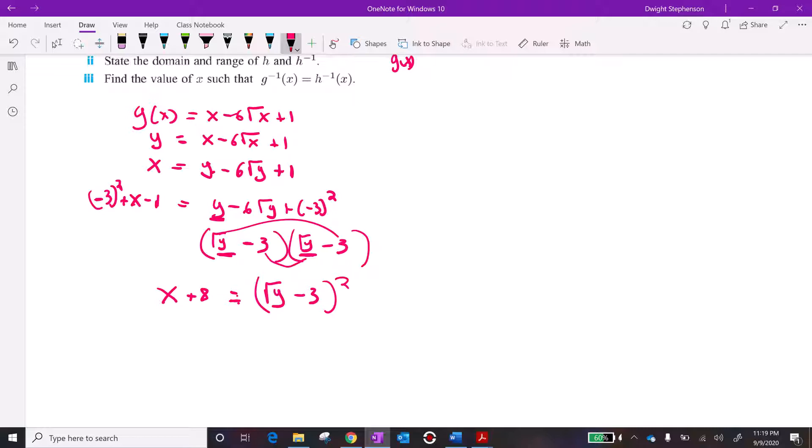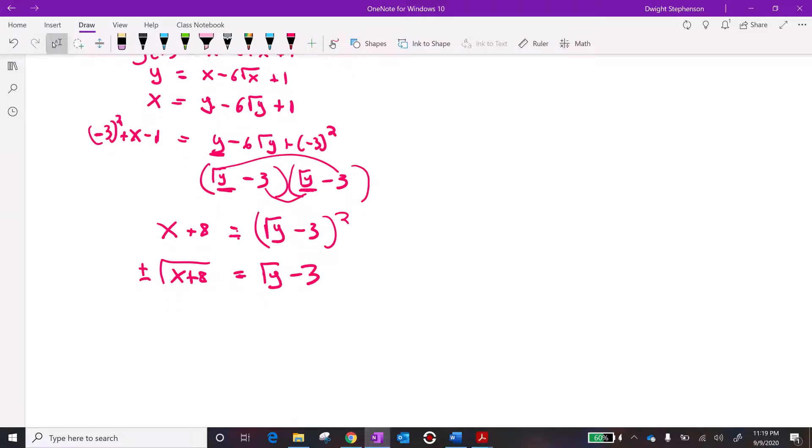Now we can try to solve. So we're going to take the square root of both sides. Don't forget you want the plus and minus. And then we add 3 to both sides. So it's going to be 3 plus or minus the square root of x plus 8 equals the square root of y. And then we're going to square both sides to get y by itself. And we're going to decide about do we want the plus or the minus here. So this whole thing has to be squared. And then the last thing is we were trying to find the inverse of g. So we're going to label this as g inverse of x.